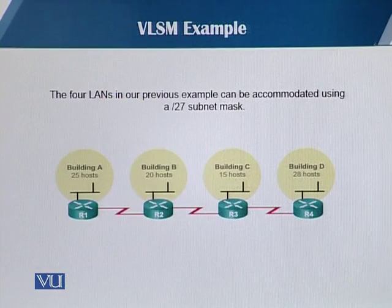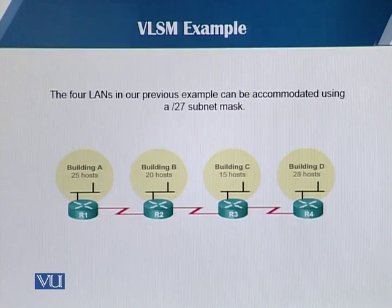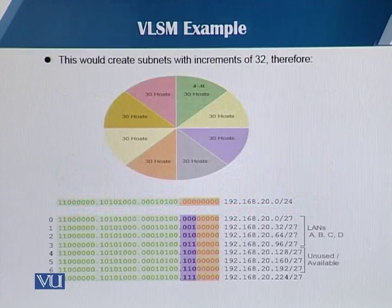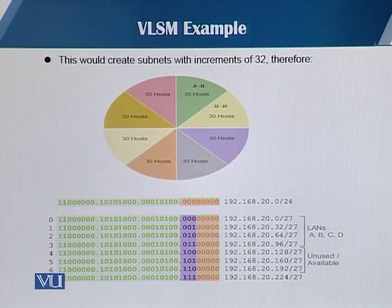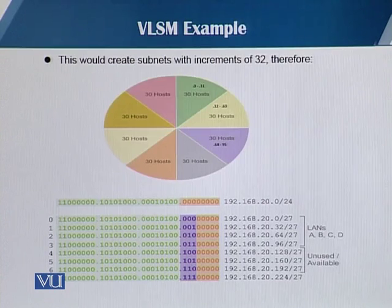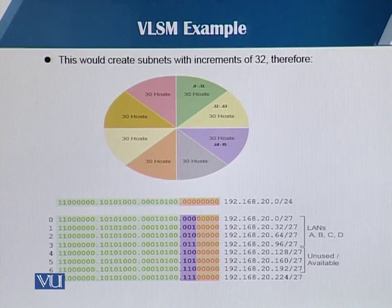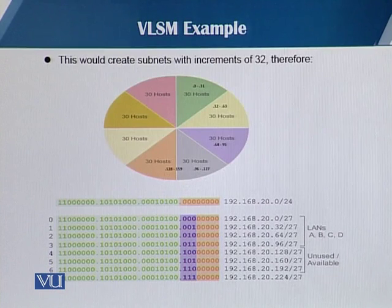Now let's look at a particular example of VLSM. The four LANs can be easily accommodated using a /27 subnet mask. This creates subnets with increments of 32, meaning each subnet has 30 usable hosts. As you can see on the slide, this pie has eight slices, representing eight subnets, each accommodating around 30 hosts. We subtract two from the total possible hosts because of the all-zeros and all-ones addresses. The slide also shows the ranges of host addresses available in each subnet.